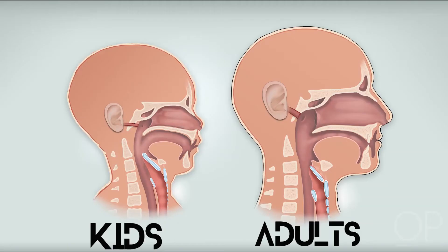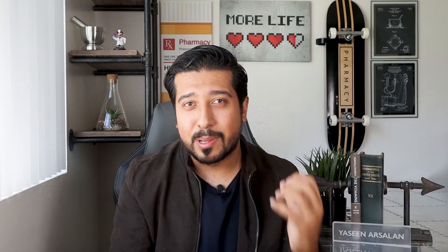So why does this happen to kids more than adults? Kids, especially 2–4 years old, have tubes that are shorter and more horizontal, which let bacteria and viruses find their way into the middle ear more easily. The tubes are also narrower, so they are more likely to get blocked.